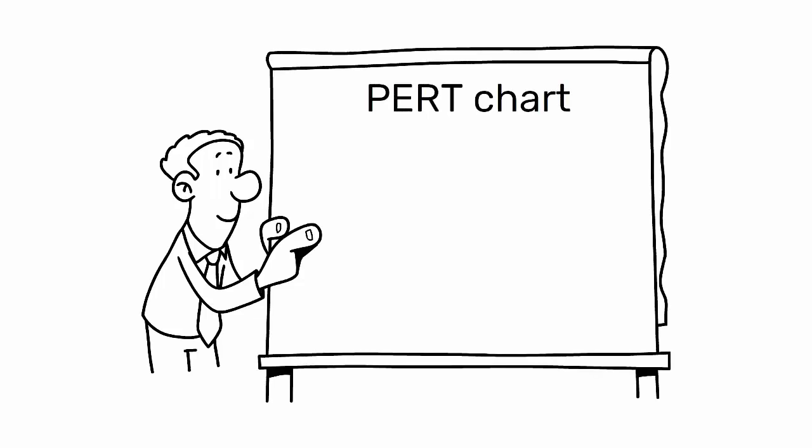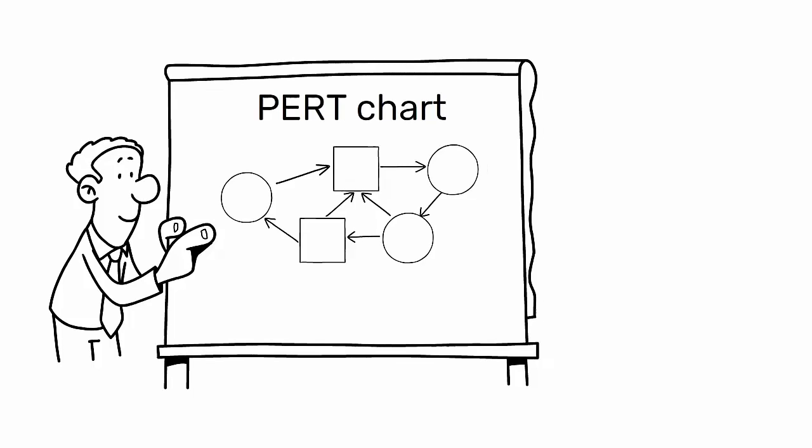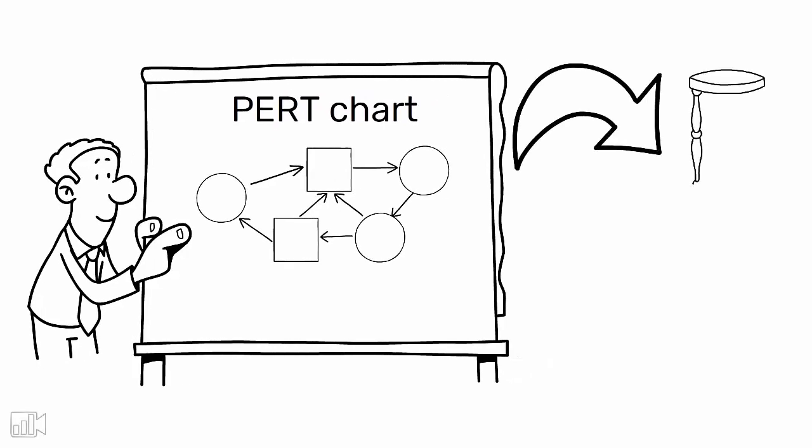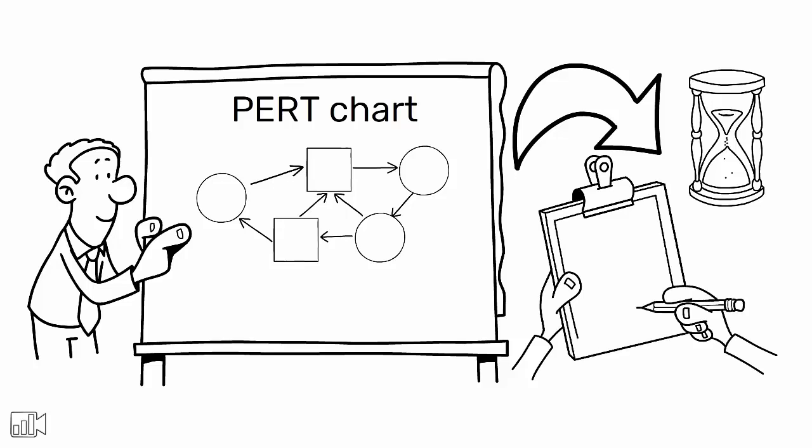In a PERT chart, tasks are represented as nodes, often circles or rectangles, and the dependencies between tasks are represented as arrows. The chart also includes information about the estimated duration of each task and the sequence in which tasks need to be completed.